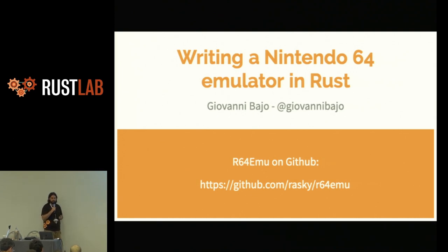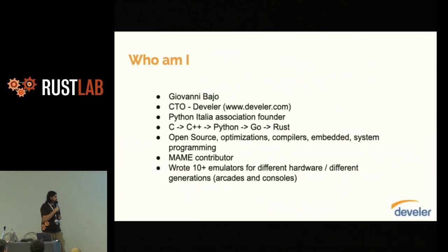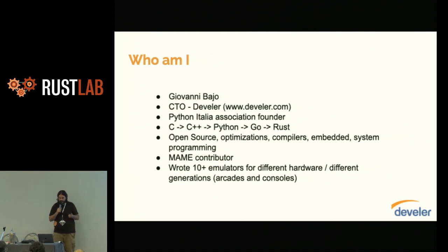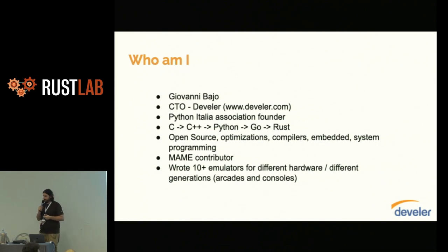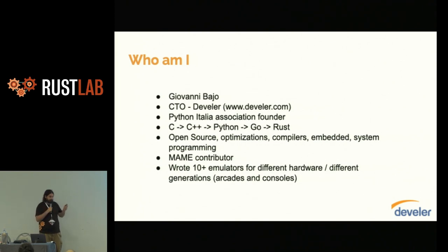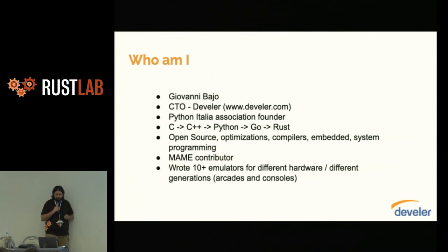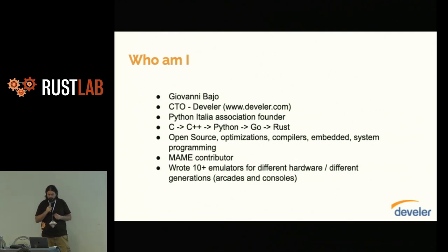I will show you something in a demo, but it's still very preliminary. Just a few words on myself: I'm the CTO of Develer, the company that organized this conference. I'm one of the founders of the Italian Python Association, which is where the love between Develer and technical conferences began back in 2005. That is my programming language history — the ones where I actually wrote more than 10,000 lines of code, sometimes much more. I'm into open source, optimization, compilers, embedded and system programming, which is why I also like emulators, because they fit this kind of category.